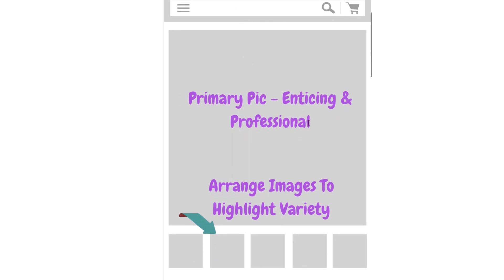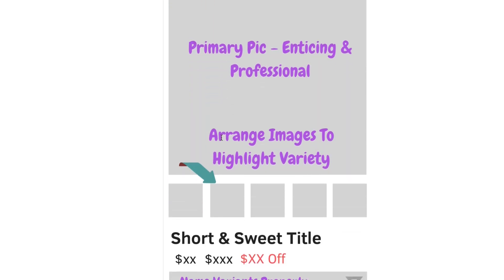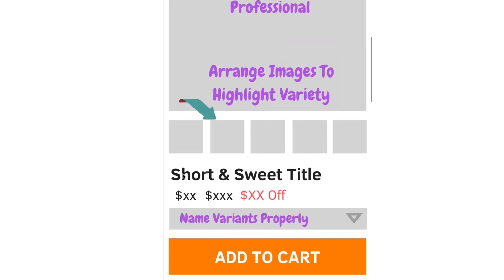The primary image on your product page needs to be enticing and professional — this is the first image people see of the advertised product. What a lot of people get wrong is they don't rearrange the other images. Choose images that look good and don't have any AliExpress-based icons or logos, and arrange them to highlight variety — different colors, different variants, different ways the product can be used. You do this by simply rearranging the images inside your Shopify backend.